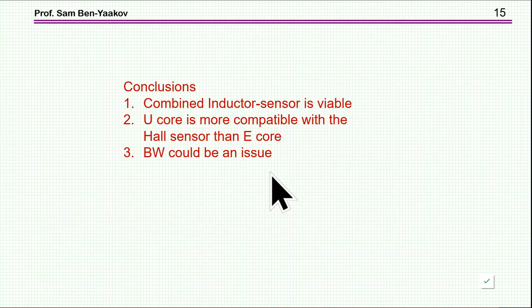So what are the conclusions of this presentation? We see that a combined inductor sensor is really viable, can be done, and it should give fairly nice results. A U-core is probably better, it's more compatible than E-core, because there is a question of where is the optimal place for the gap. In the U-core, we put it on the side, which also is not of course desirable.